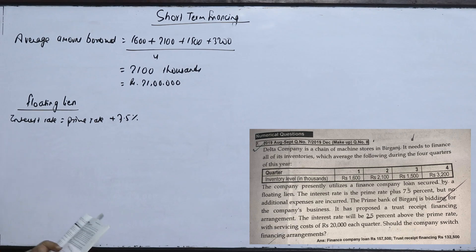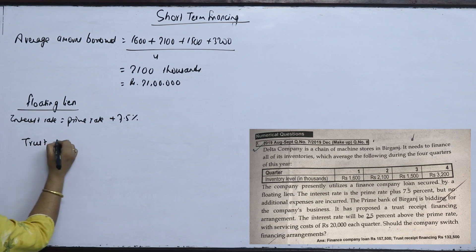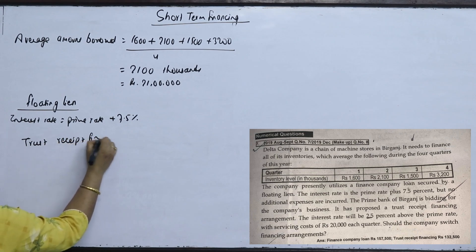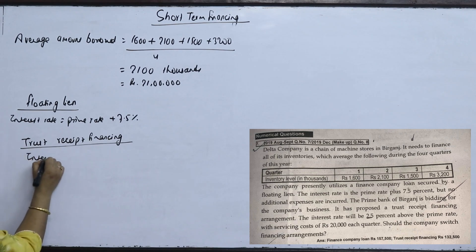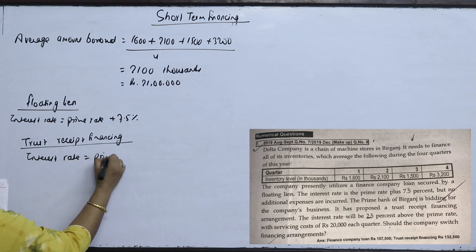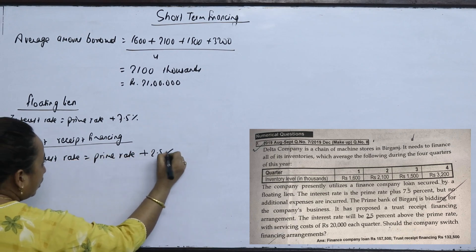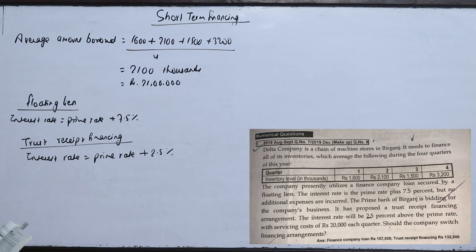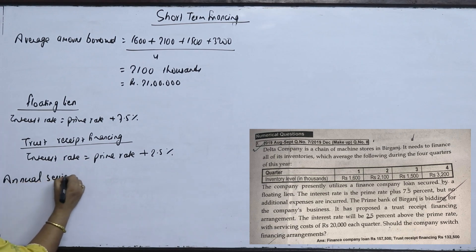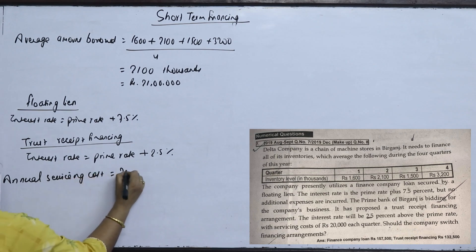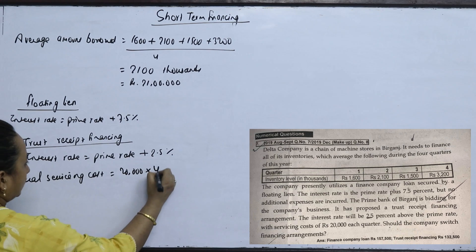Now the prime bank of Birgons is bidding for the company's business. It has proposed trust receipt financing. The interest rate will be 2.5% above the prime rate, with a servicing cost. The annual servicing costs are 20,000 per quarter, so 20,000 times four quarters annually.